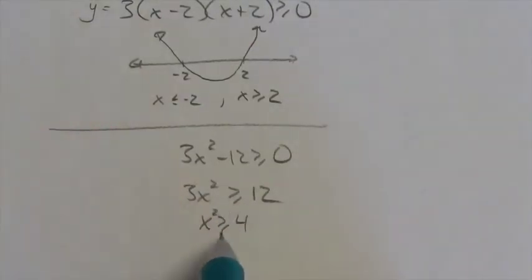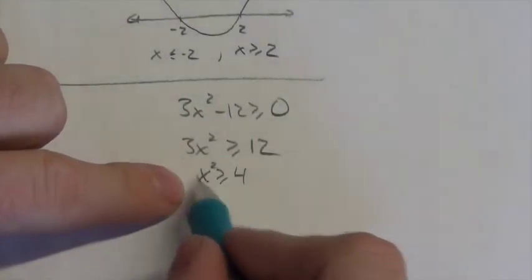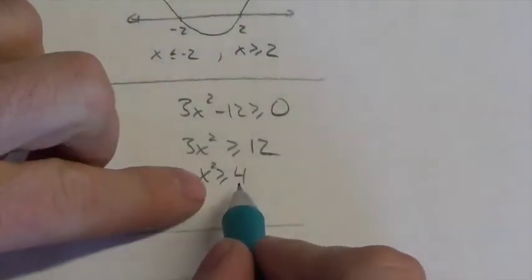Okay, dividing by positive 3 doesn't change the direction of the sign here. And now when you take the square root of this, bear in mind what this is saying. It's saying that if you square some number, the result is going to be greater than 4.